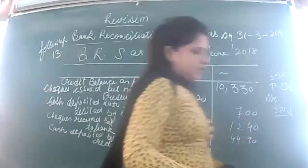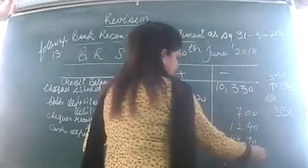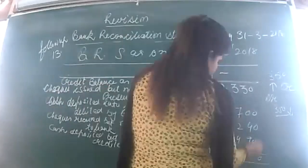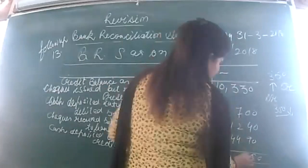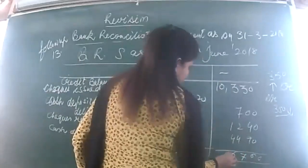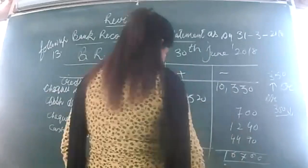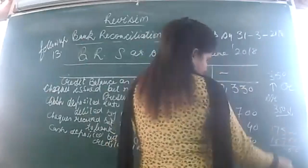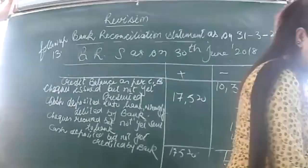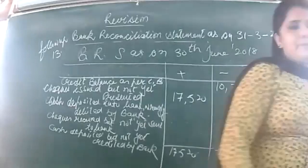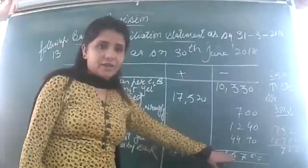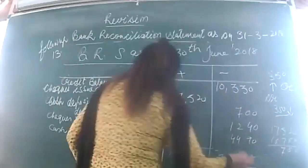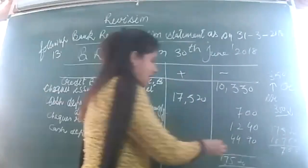Many items are appearing in this BRS. The positive side total includes 17,520. Total the plus side: the total comes to 17,520. Then from this, deduct the negative side total of 16,760 — the difference is 760, and since the positive side is greater, that is a debit balance as per passbook. Both sides will show the same total. Credit balance as per passbook comes to 7,760. Write the balance: credit balance as per passbook — 7,760.